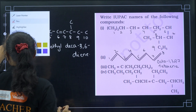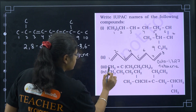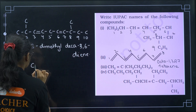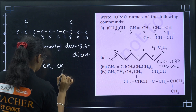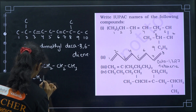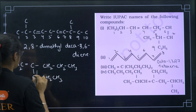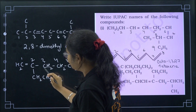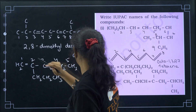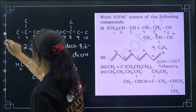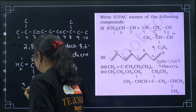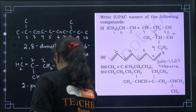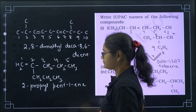The third structure: CH2=C with a propyl group attached. Numbering the longest chain — the double bond is at position 1 and the propyl group is on the second carbon. The name is 2-propylpent-1-ene.